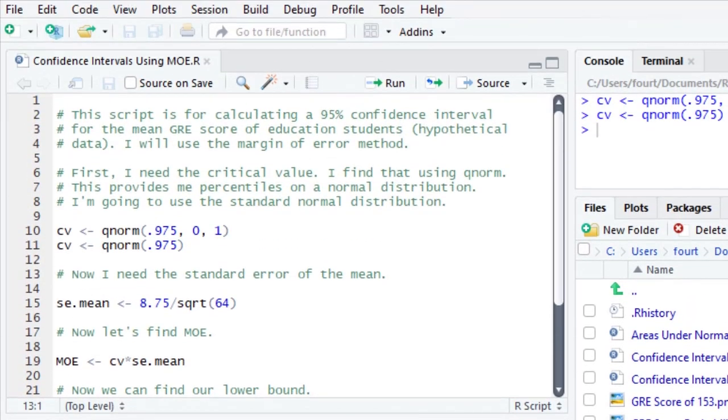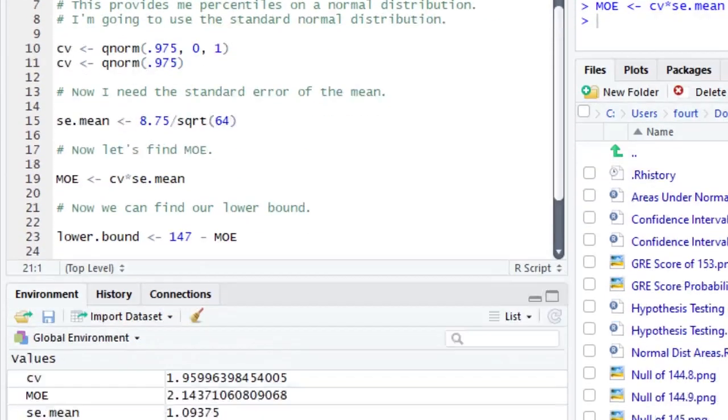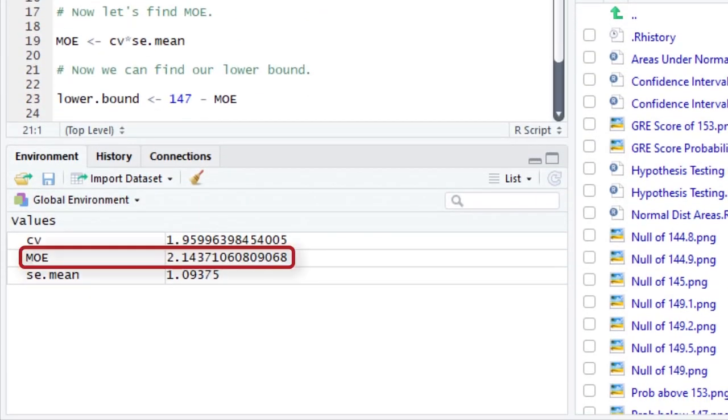Now I need the standard error of the mean. That's simply the standard deviation of GRE scores, 8.75, divided by the square root of our sample size, in this case the square root of 64. To calculate MOE, I take the product of the critical value and the standard error of the mean. MOE is just over 2.1.